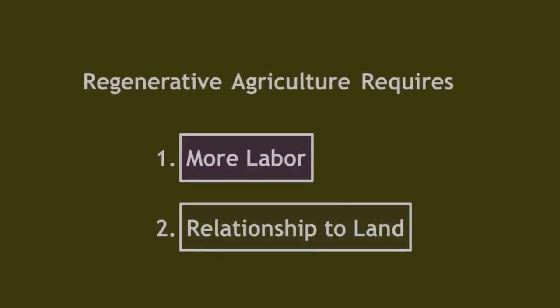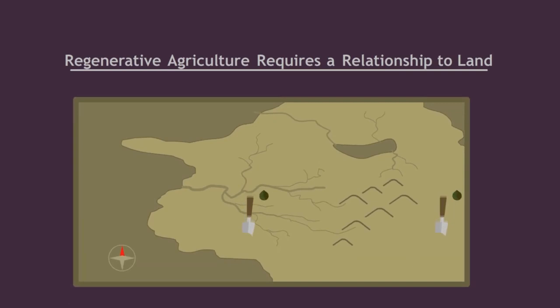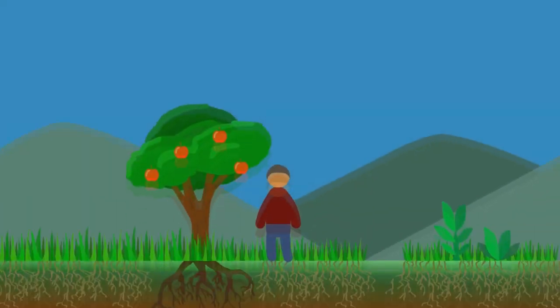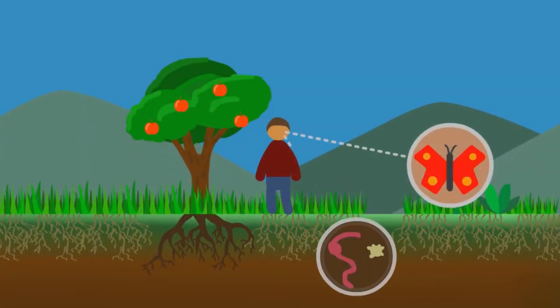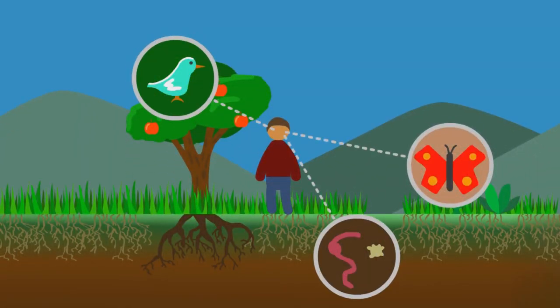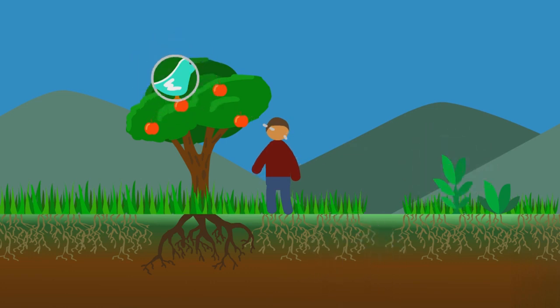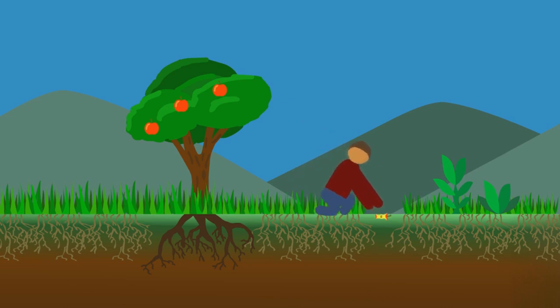And the other is that in regenerative agriculture, what works in one place may not work on another continent or even in the next valley over. The only way to make them work is to be a patient, attentive observer of that particular land. So it requires an ongoing intimate relationship that is unique between the human interacting with that land and the land itself.